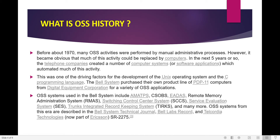Looking at a brief history of OSS: before 1970, many OSS activities were performed by manual administrative processes. However, it became obvious that much of this activity could be replaced by computers. In the next five years, telephone companies created a number of computer systems and software applications which automated those activities. This was one of the driving factors for the development of the UNIX operating system and the C programming language.